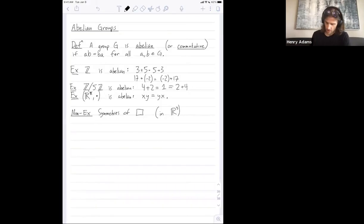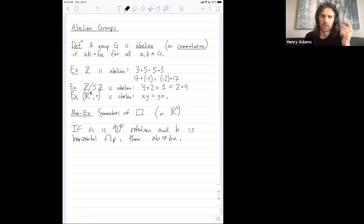All right, so if a is 90 degree rotation and b is the horizontal flip, we just saw by my pictures then a times b is not equal to b times a. So if you can find any elements where a times b is not equal to b times a, then the group is not abelian, not commutative. But if for all elements a and b you have a times b is equal to b times a, then it is abelian.